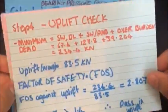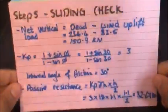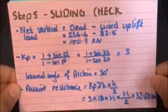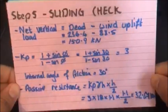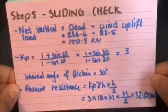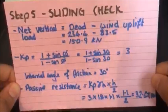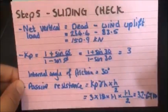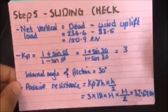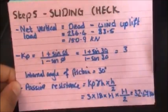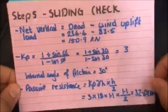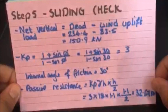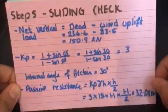Which is the sliding check. So for the sliding check, you need the net vertical load, which is essentially the dead minimum minus the wind uplift. And the dead minimum you just worked out in step 4, so if you need to go back, just rewind and pause the video and you can write down the minimum dead load. So in this example, it's 234.4 minus the wind uplift, which is 83.5, which gives you a net vertical load of 150.9 kilonewtons.